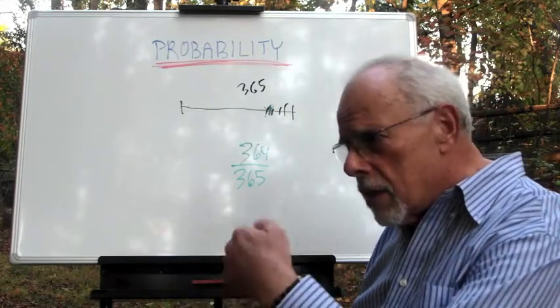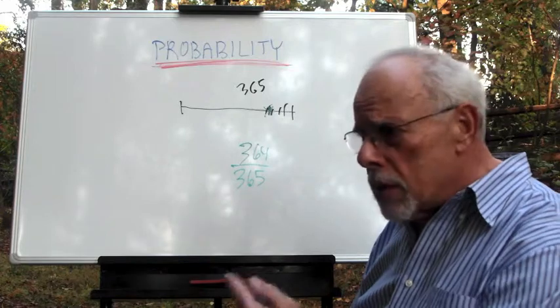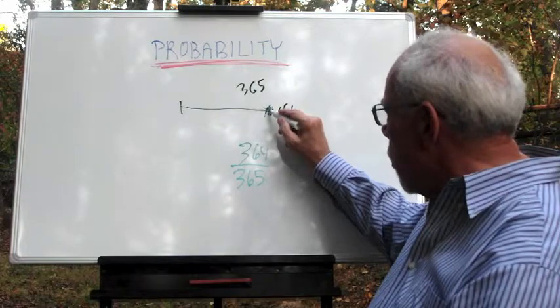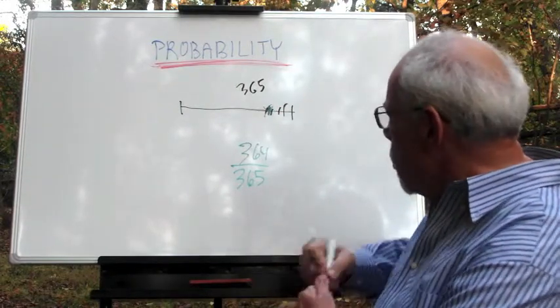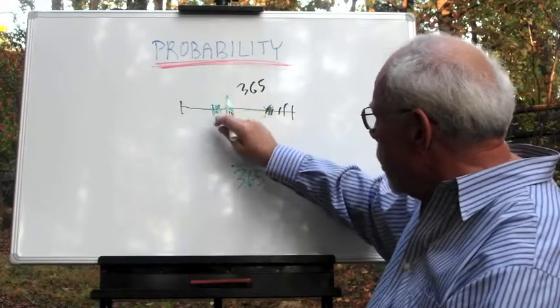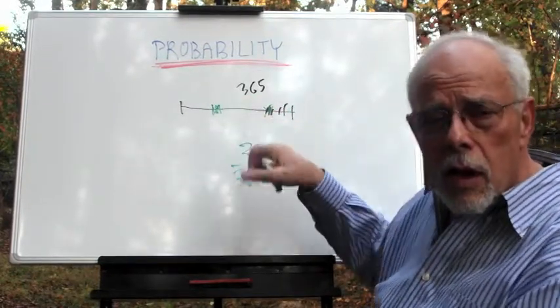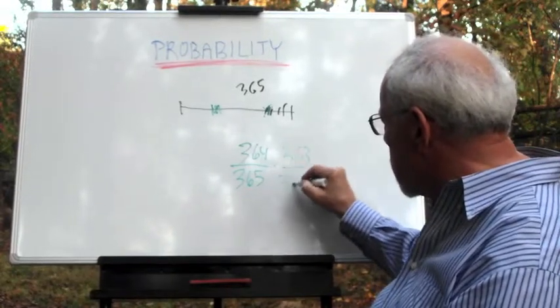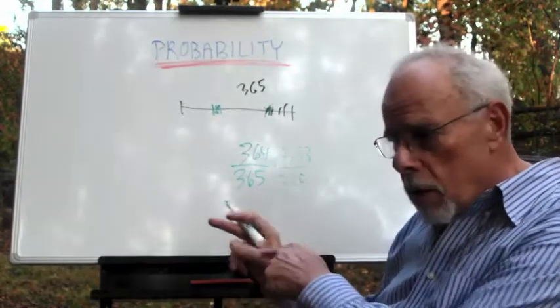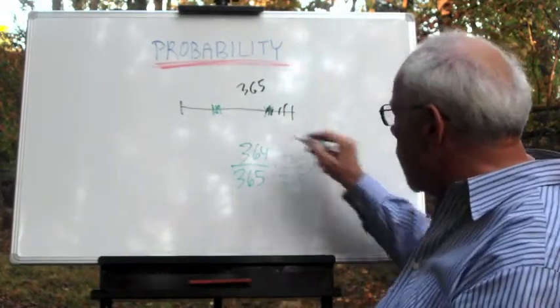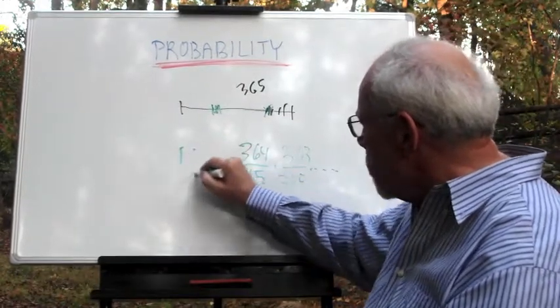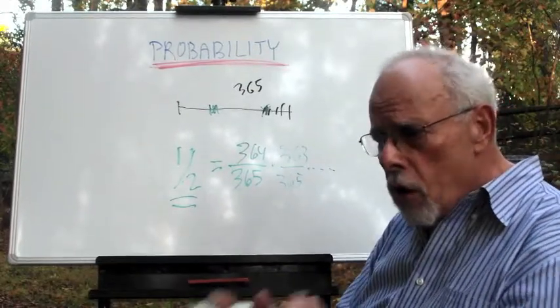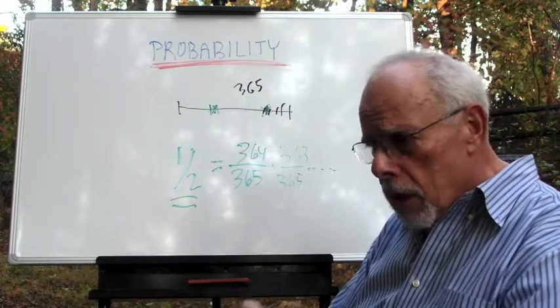And then we ask the third person to come in. What is the chance that this third person will not have the birthday of the first one, and not the birthday of number two? How many days are left? 363. So, you multiply it by 363 to 365. Multiplication, the same way that we have seen with the dice. And you keep going and enter more and more people until this becomes half.